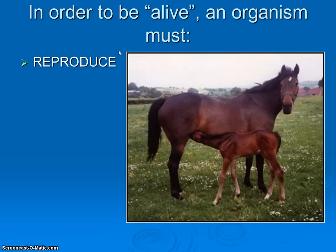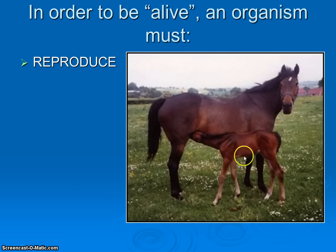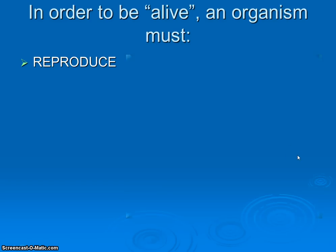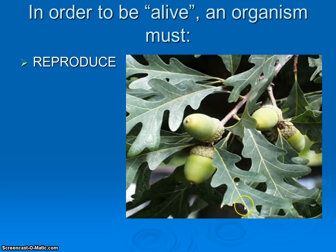Stop and look at the image for a second — what do you notice about the horse and its little baby horse? The offspring resembles the parent: same body structure, same size — or will be the same size rather — similar shape. So when organisms reproduce, they're not making some brand new freak offspring; they're generating offspring that look very much like themselves. And that works for animals like the horse, and it works for plants as well.